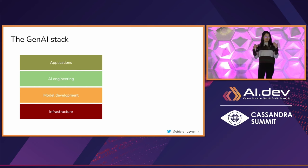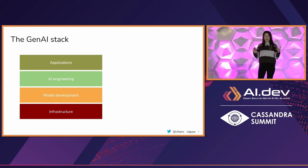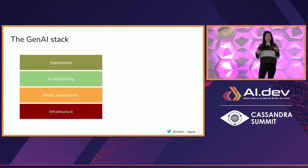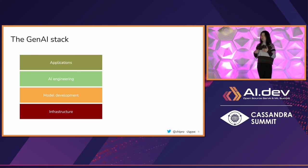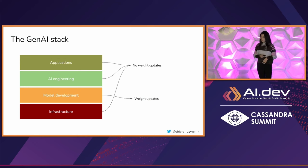At the top layer we have a lot of applications — chatbots, image editing, and all these really cool applications you can use on the phone, desktop, or browser. Just below that is the application development layer, what we call AI engineering, where you develop applications for end users. Below that is model development, where you actually create models like LLaMA. And of course there's all the infrastructure — that's where everything happens.